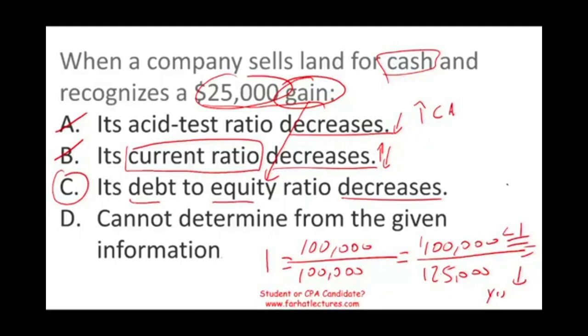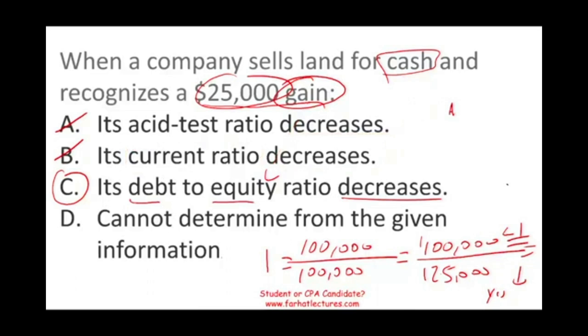On the exam, it should take you about 20 seconds to eliminate A and B, and then you're down to 50-50. From there, you can try to determine whether it's C or D.